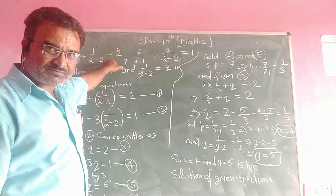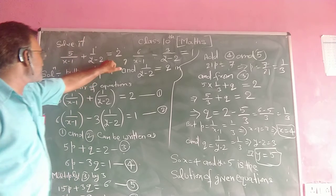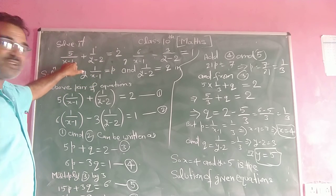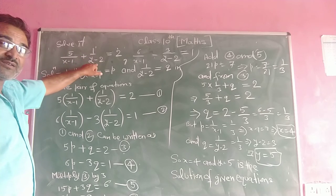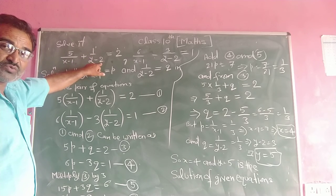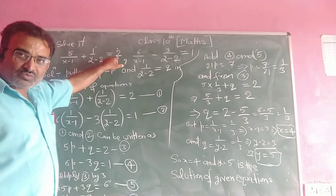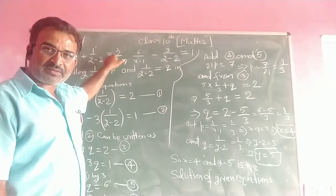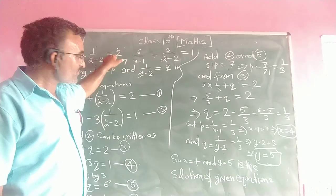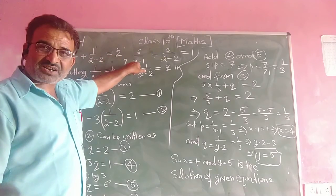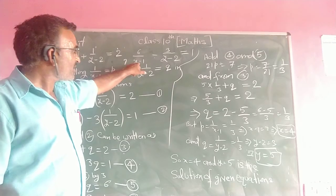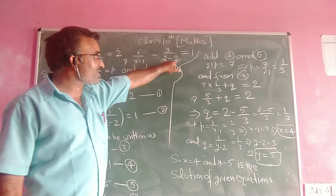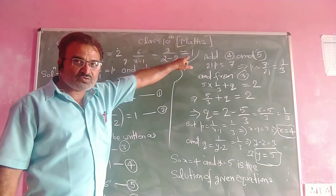Please see an example. The first equation is: 5 upon (x minus 1) plus 1 upon (y minus 2) is equal to 2. The second equation is: 6 upon (x minus 1) minus 3 upon (y minus 2) is equal to 1.